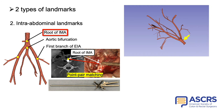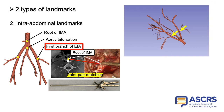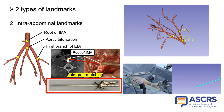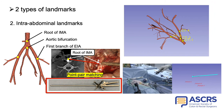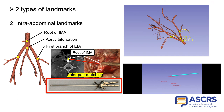In this study, the root of the inferior mesenteric artery, the aortic bifurcation, and the root of the first branch of the external iliac arteries were used as intra-abdominal landmarks. First, these points were identified on CT images and registered as landmarks in the CT coordinate system. The positions of the intra-abdominal landmarks were obtained using forceps equipped with an infrared reflective marker. The corresponding points on the patient were registered as landmarks in the patient coordinate system by pointing directly to them with the forceps.